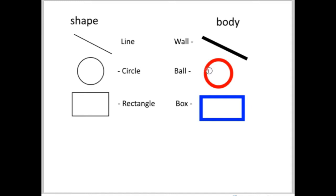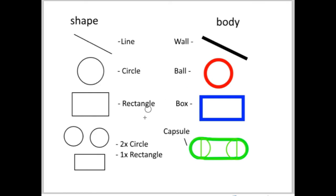Similarly, the box class will have a rectangle component, the wall will have a line component, and the capsule class will have three shapes as components — one rectangle and two circles. I will use SAT on each of those components, and if not all of them return false, then I know one of the components is colliding, so the capsule itself is colliding too.